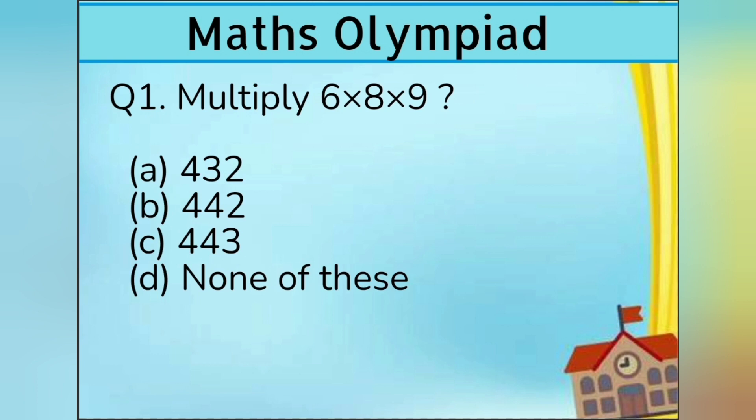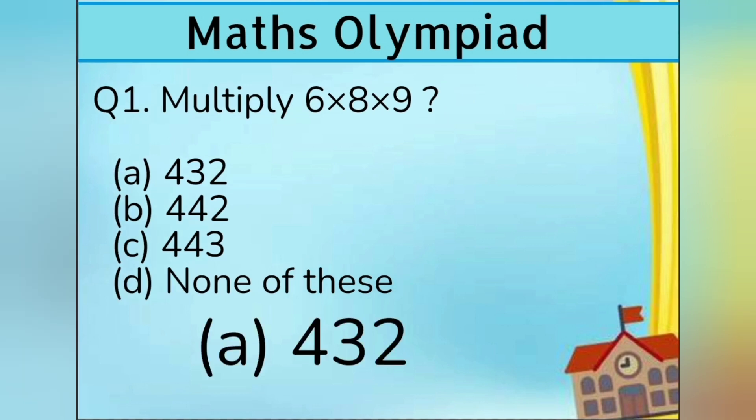Multiply 6 into 8 into 9 equals to: Option A 432, Option B 442, Option C 443, and Option D none of these. Answer is Option A 432.